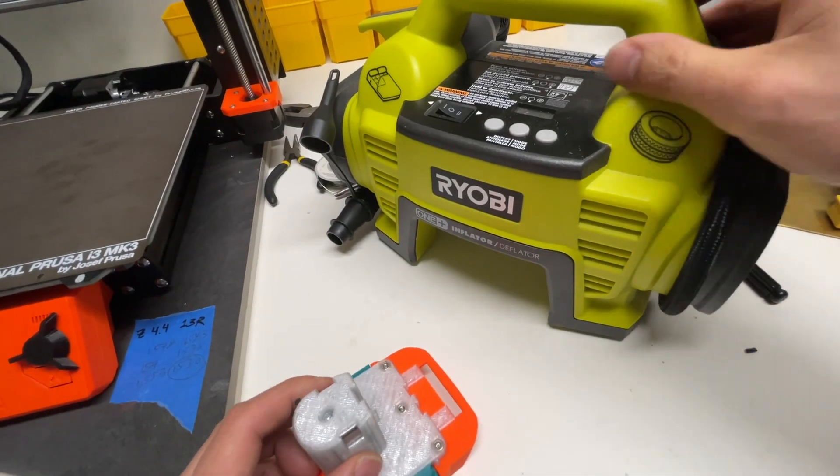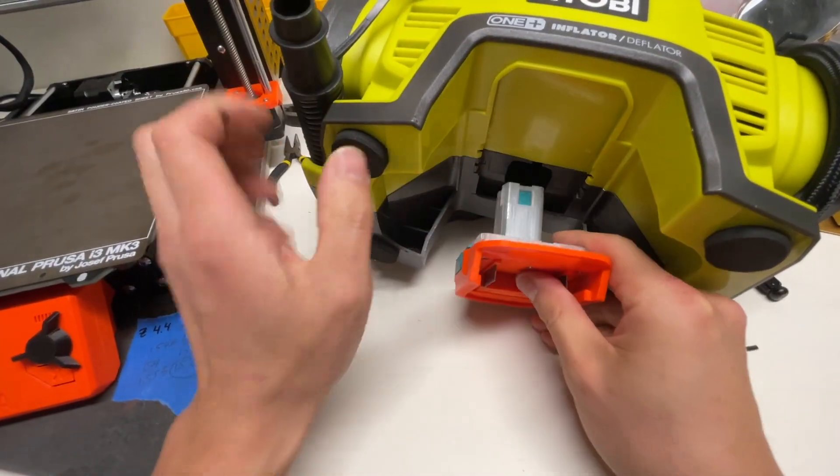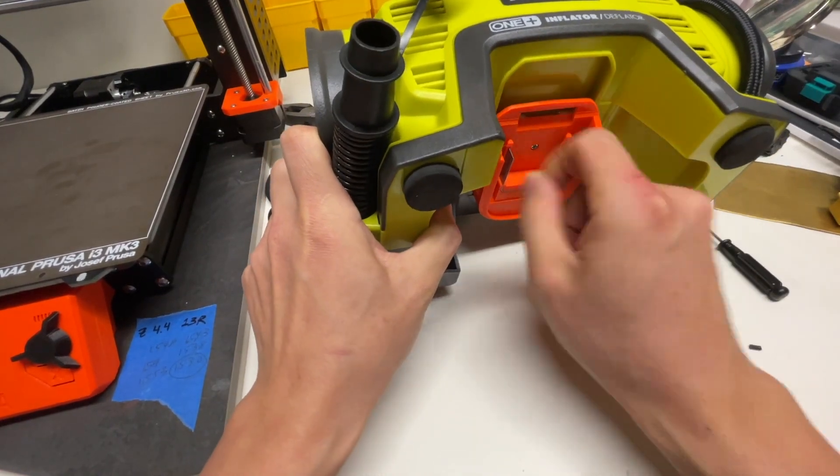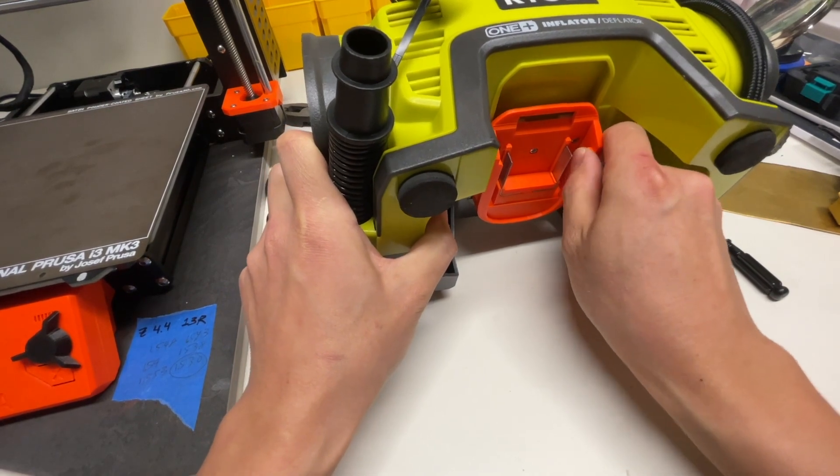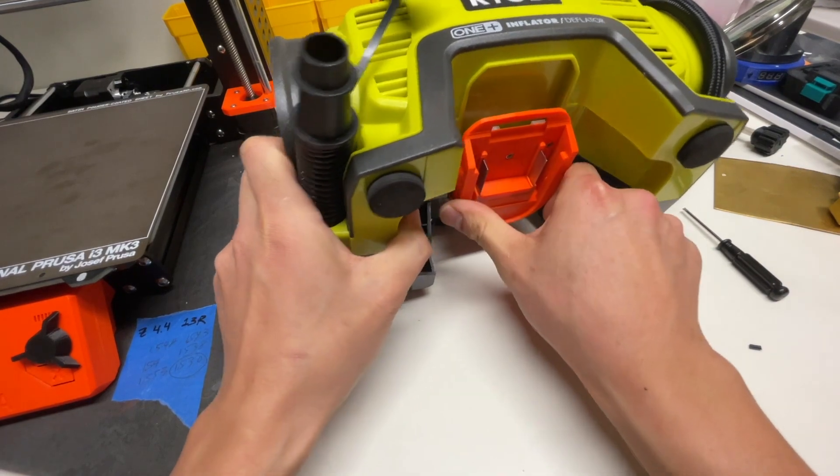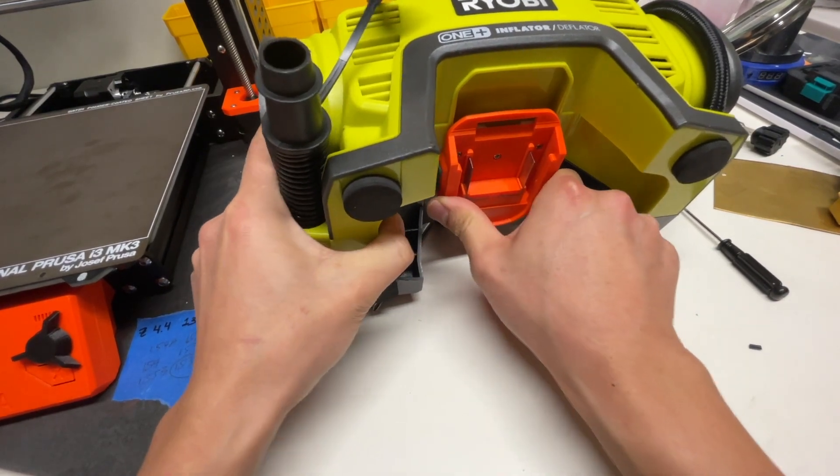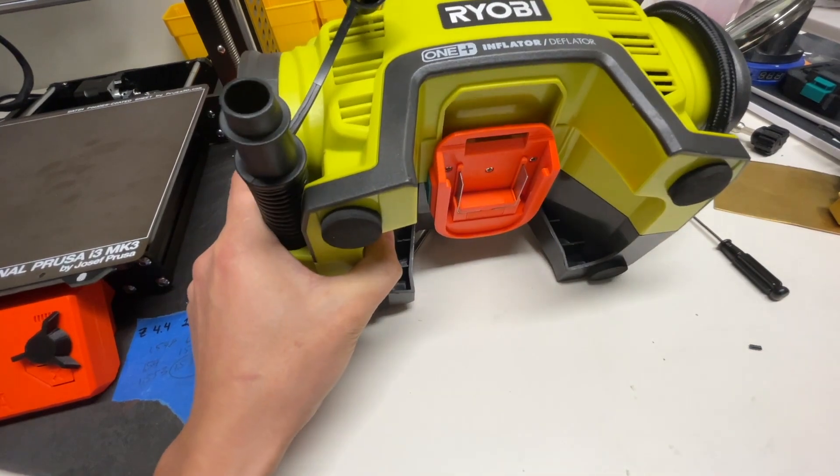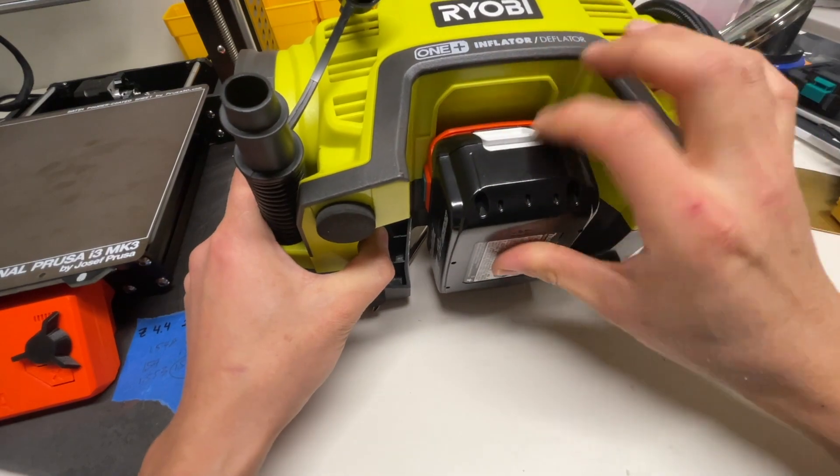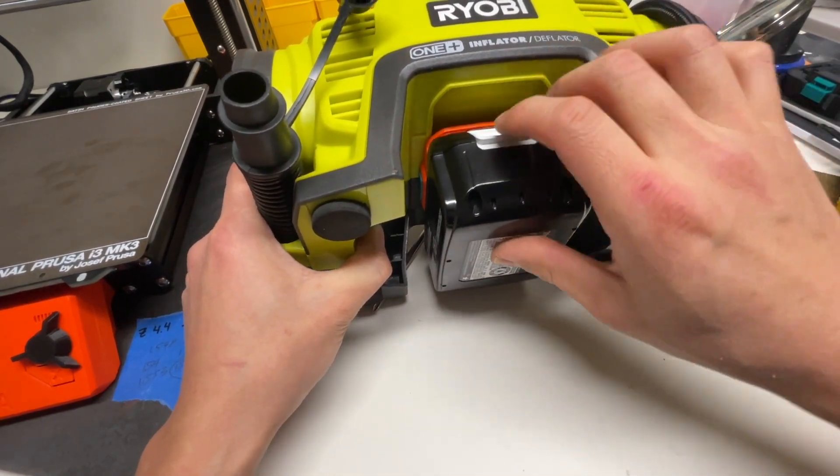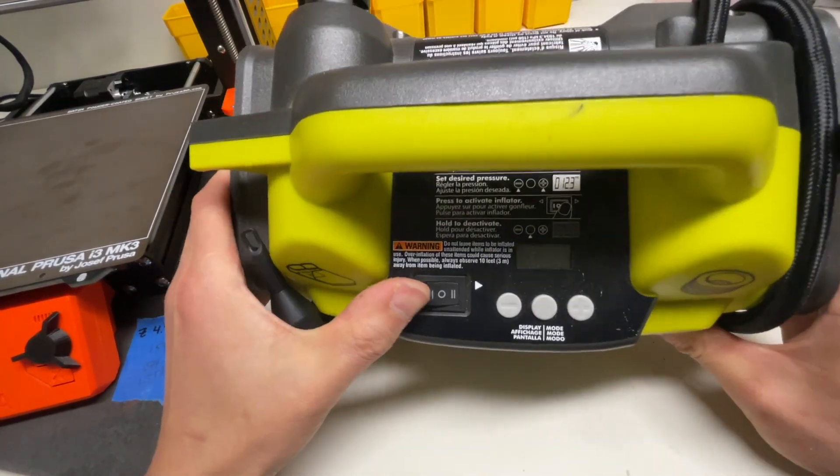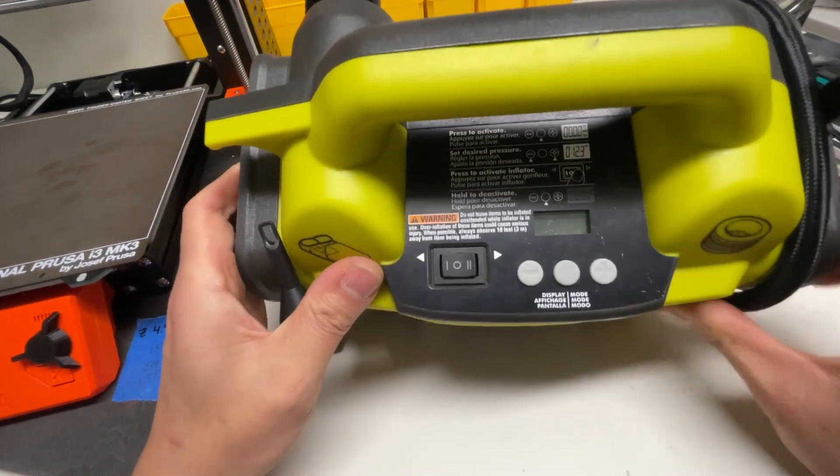So I've got this inflator. Clips on perfect without any wiggle to it. It fits in really smooth. Okay we'll add this Makita battery in. This has a satisfying click in it too. And a moment of truth. Let's turn this on.